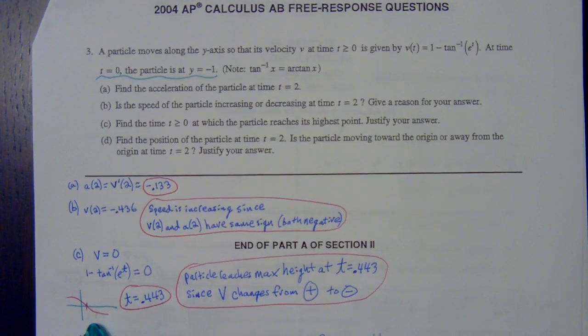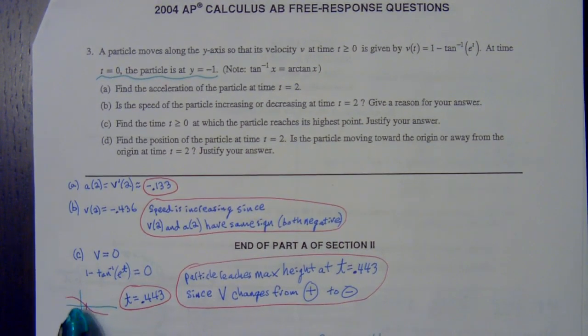I jot that graph down because notice this is the velocity graph. The velocity graph changes from above to below the x-axis, which means the velocity changes from positive to negative values. So if your velocity changes from positive to negative, that's what's making that a maximum.